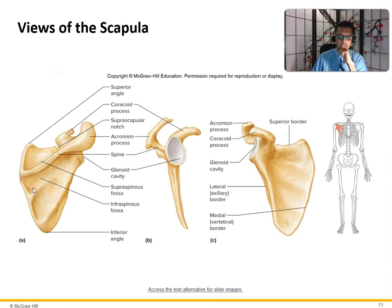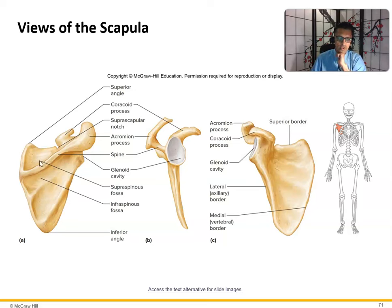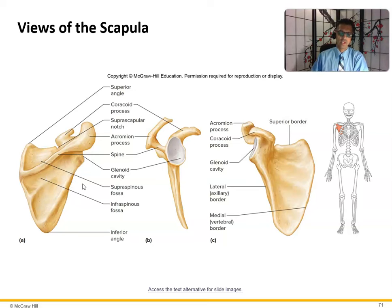Looking at the articulations of the scapula: the superior angle, coracoid process, the acromion, the spine of the scapula, and the glenoid cavity where the head of the humerus sits. Remember the terms supraspinous and infraspinous — when we study muscles, you'll encounter the supraspinatus and infraspinatus muscles. Learning these terms now carries over to other chapters. There's the coracoid process and the acromion process.